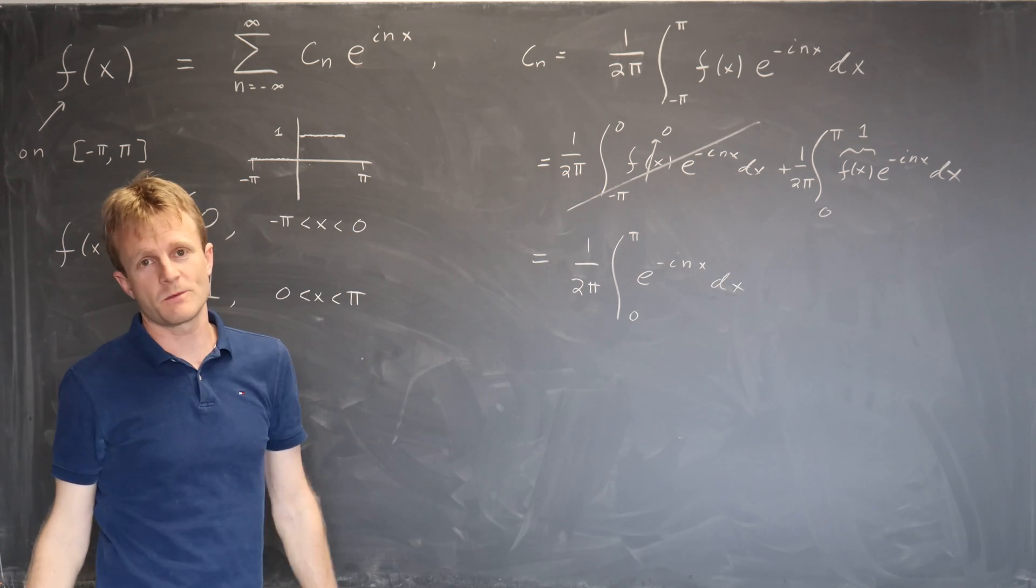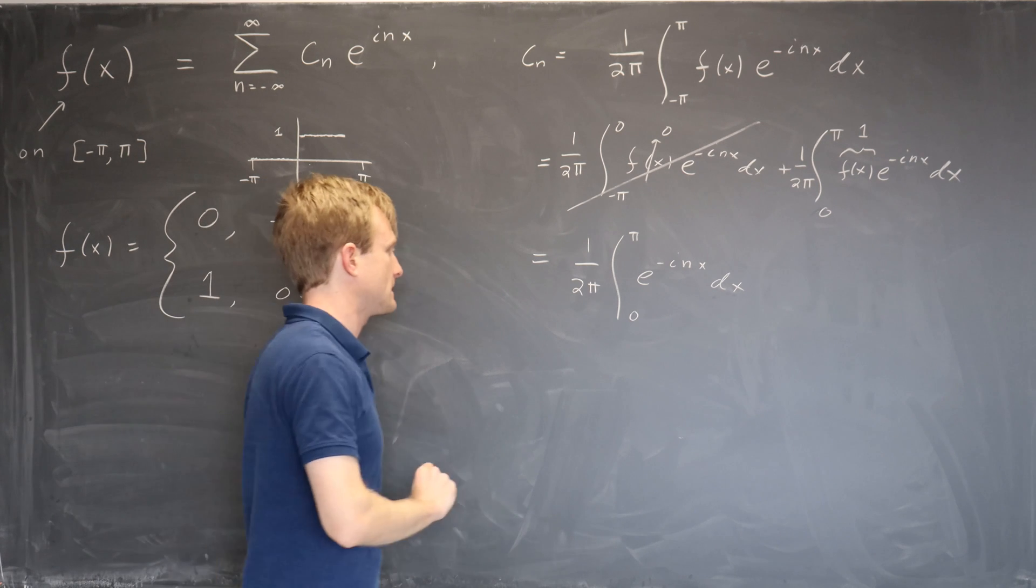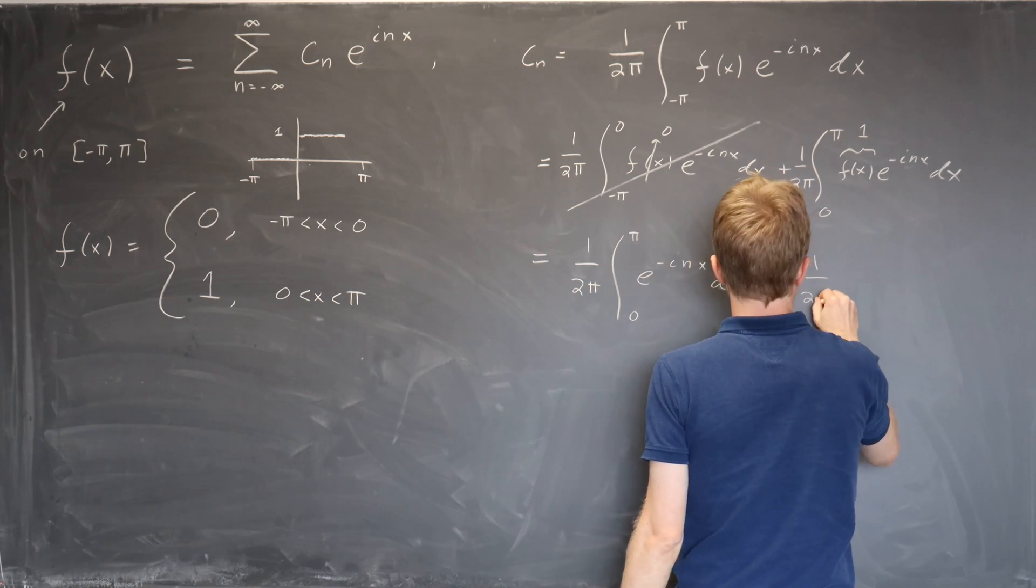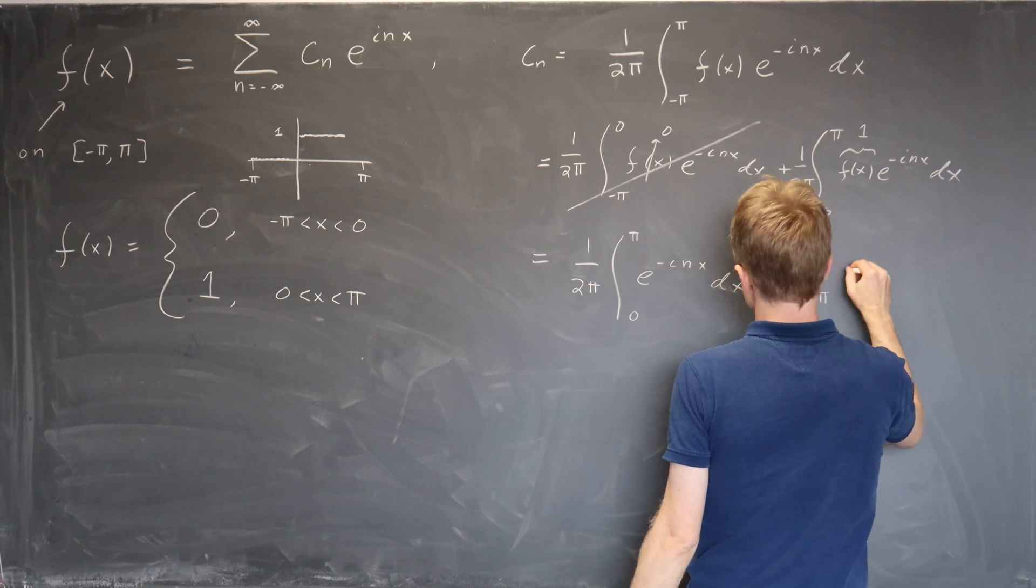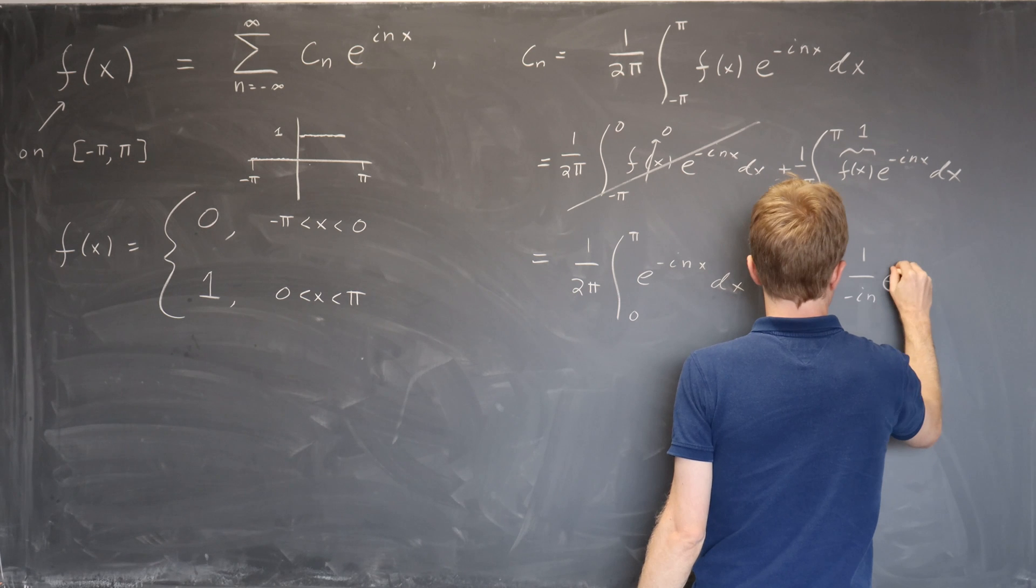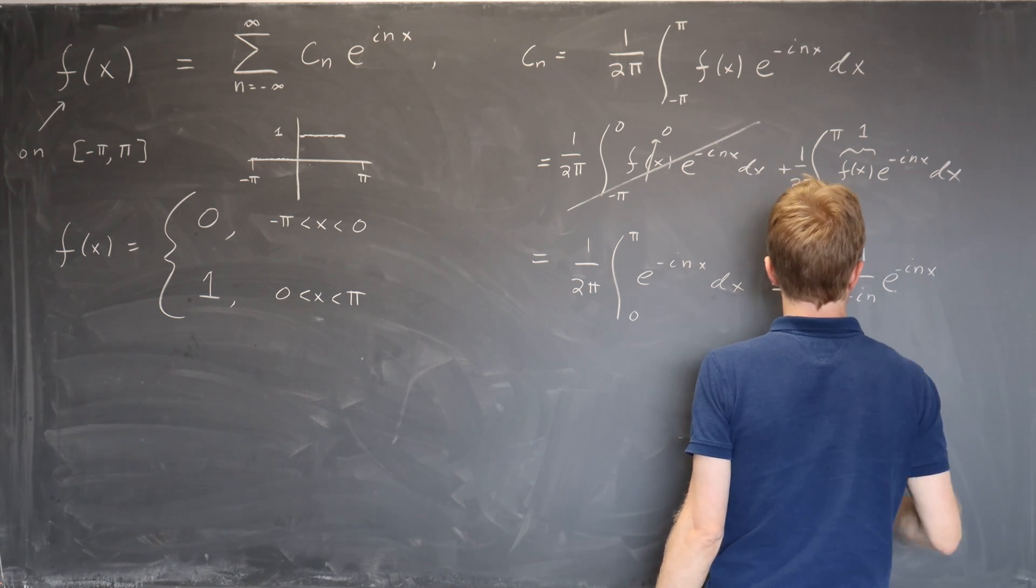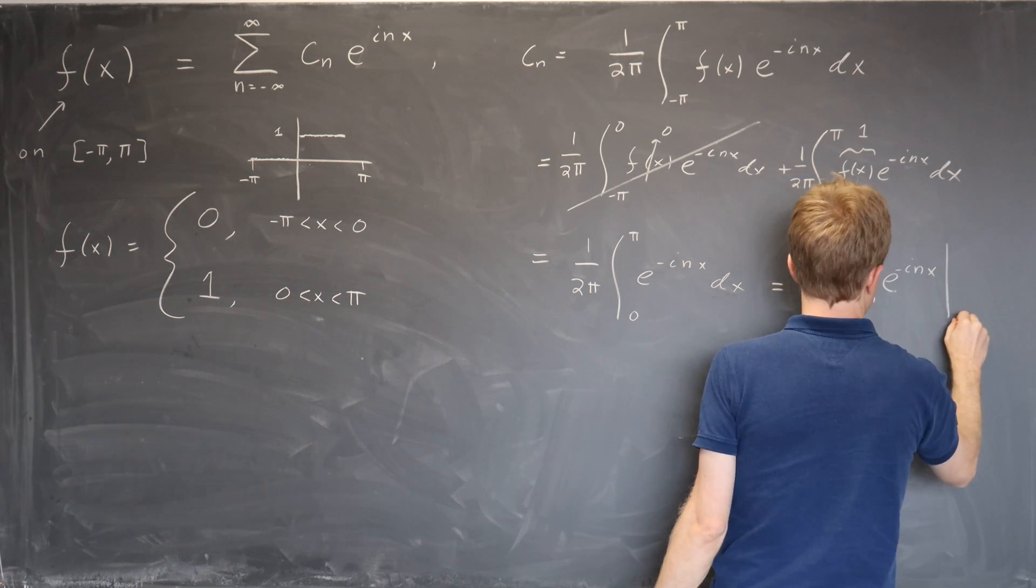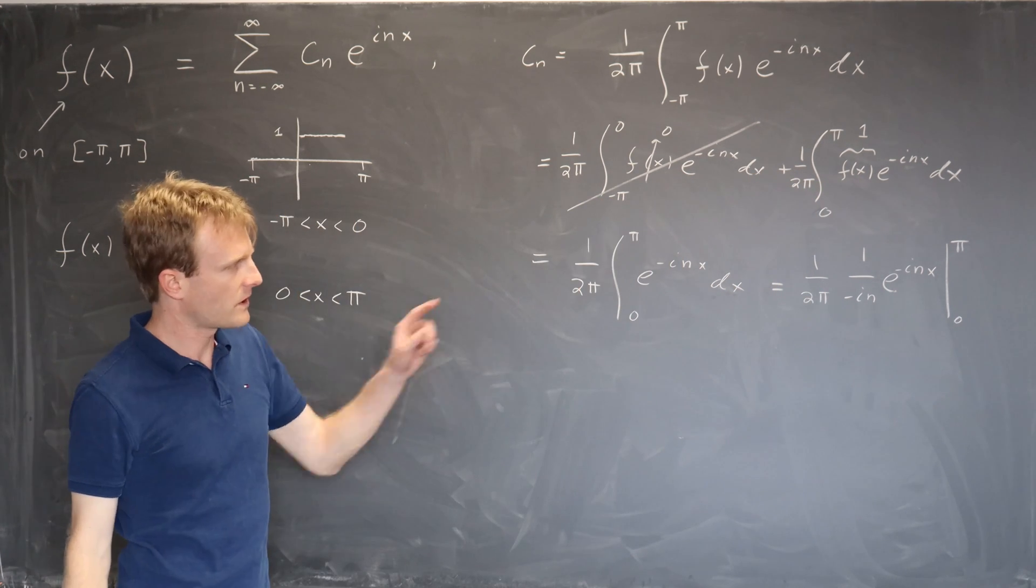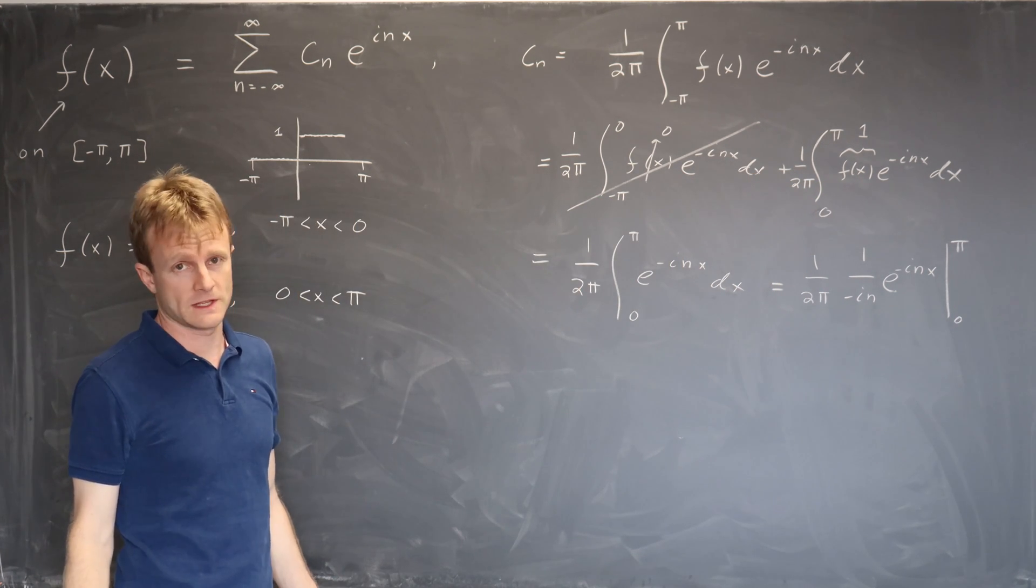Alright, pitfall number one. This looks like an easy integral, right? It's an exponential, so it's just 1 over minus in times e to the minus inx, evaluate it from 0 to pi. Looks good, right? But there's a problem with this if n equals 0.